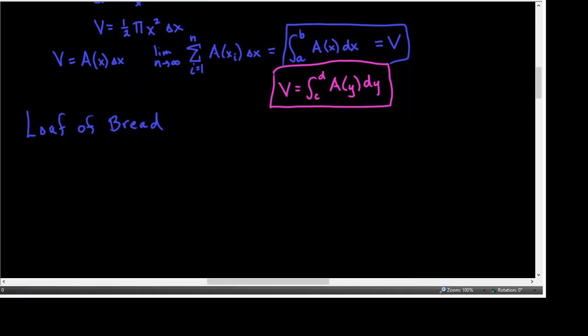Example 5: the base of the solid is the region bounded by certain lines. What we'll be told is that the base of the solid lies in the x-y plane. They'll tell us what that base looks like — it's like the crust on the bottom of the bread where it touches the pan. They say the base is bounded by f(x) = 1 − x/2.